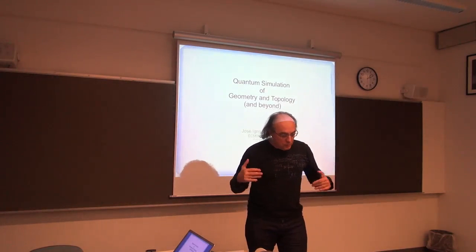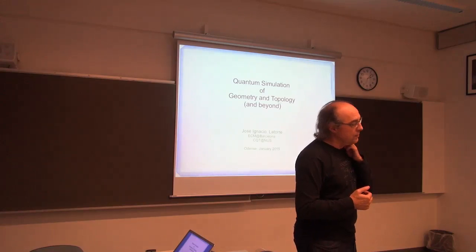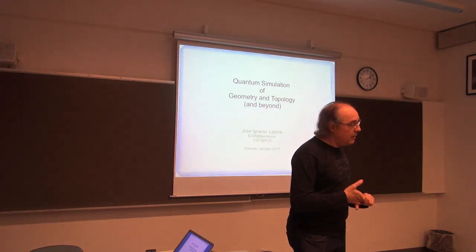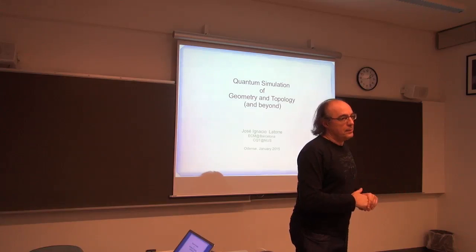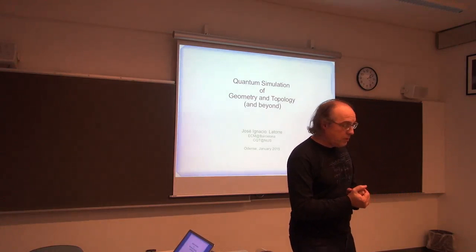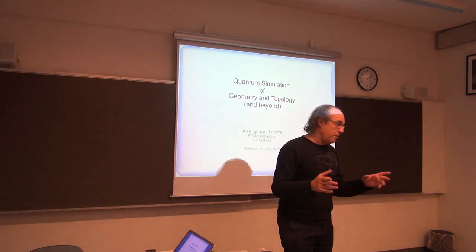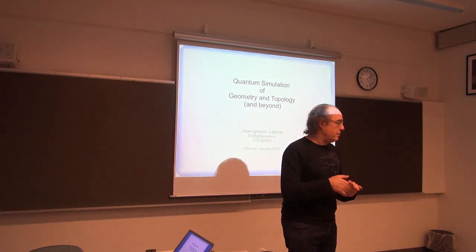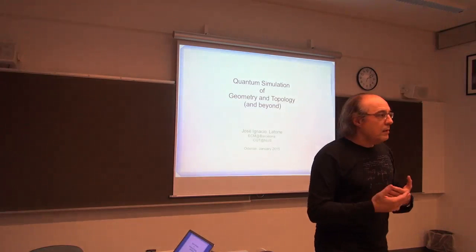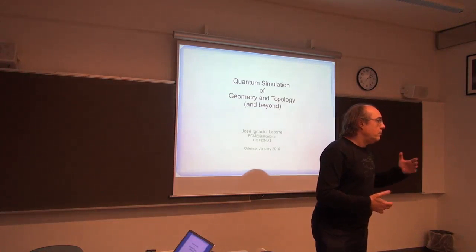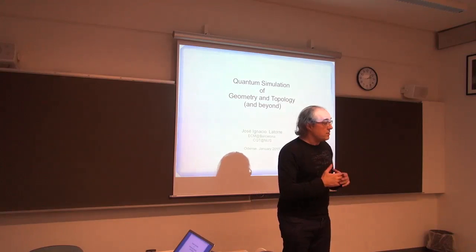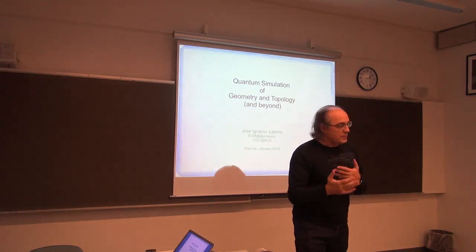Although we have been working on that for many years, there are very few examples where quantum computation is exponentially better than any classical device. But we do have examples. Those are not only factorization — which is well known because all classical cryptography based on RSA is based on factoring large numbers — but also other problems, like searching through a mesh, where quantum mechanics can do it exponentially faster.